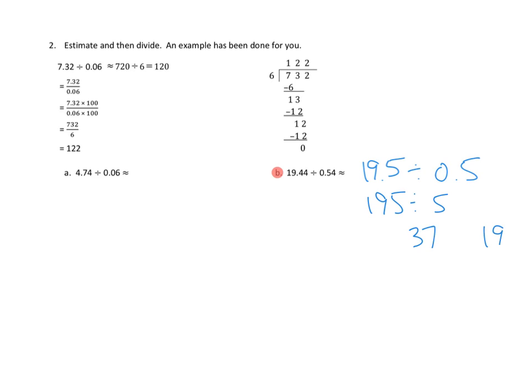You might need to do this. 195 divided by 5. 3, 15, 4, 5. Oh, 49. See? An error. Nice job. 39. So I think our estimated quotient is about 39.